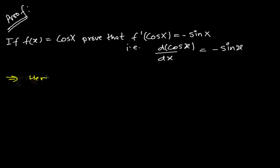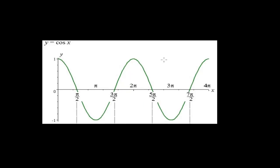Our function is y equals to, or you can say f(x) is equal to cos x. If you see the graph of cos x, it will be looking like this — this is the actual graph of cos x.